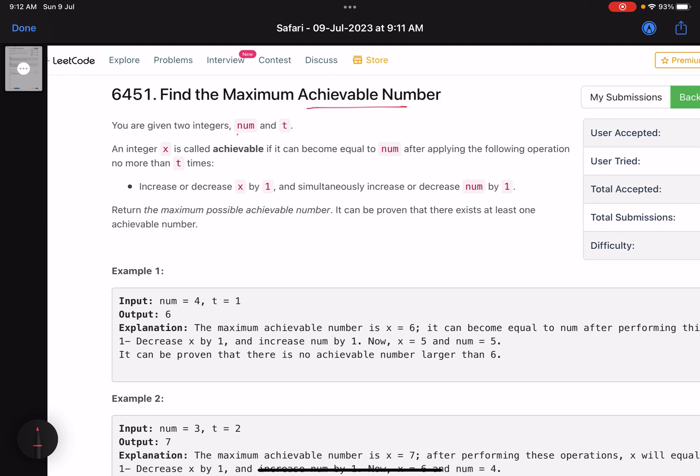You are given two integers num and t. An integer x is called achievable if it can become equal to num after applying the following operation no more than t times. The operation is: increase or decrease x by 1 and simultaneously increase or decrease num by 1. Return the maximum possible achievable number.